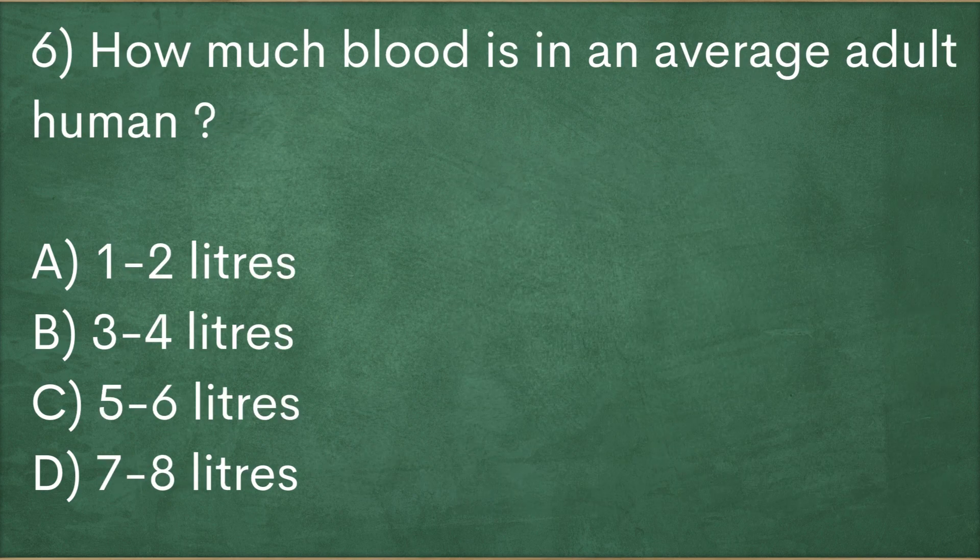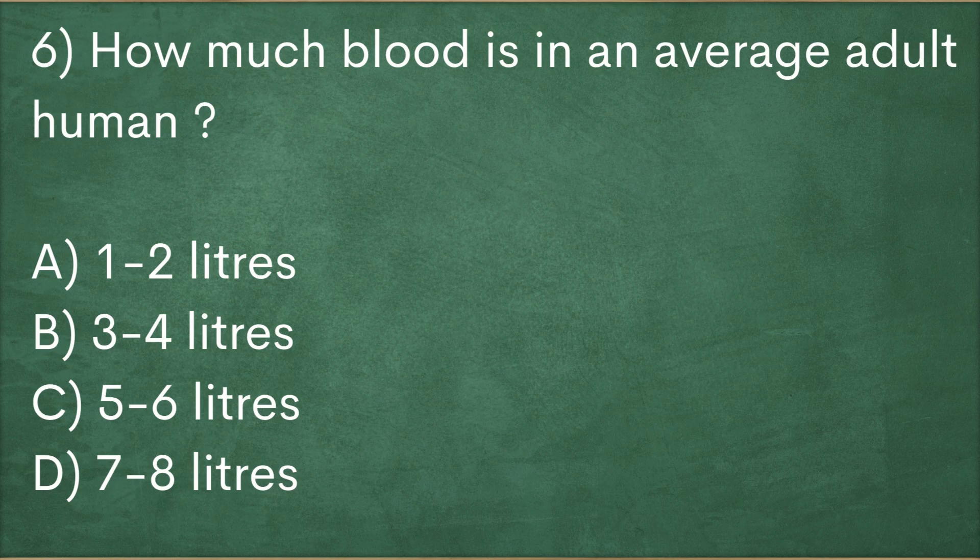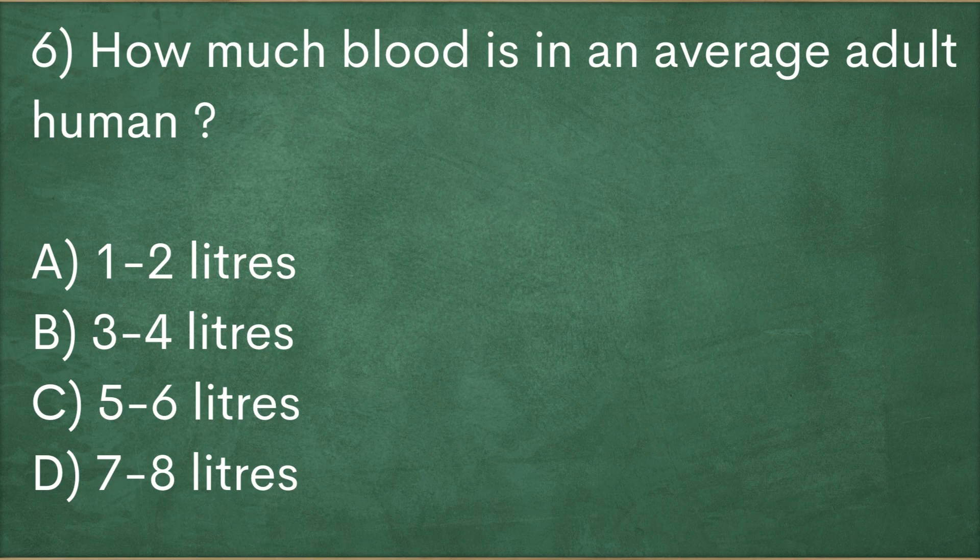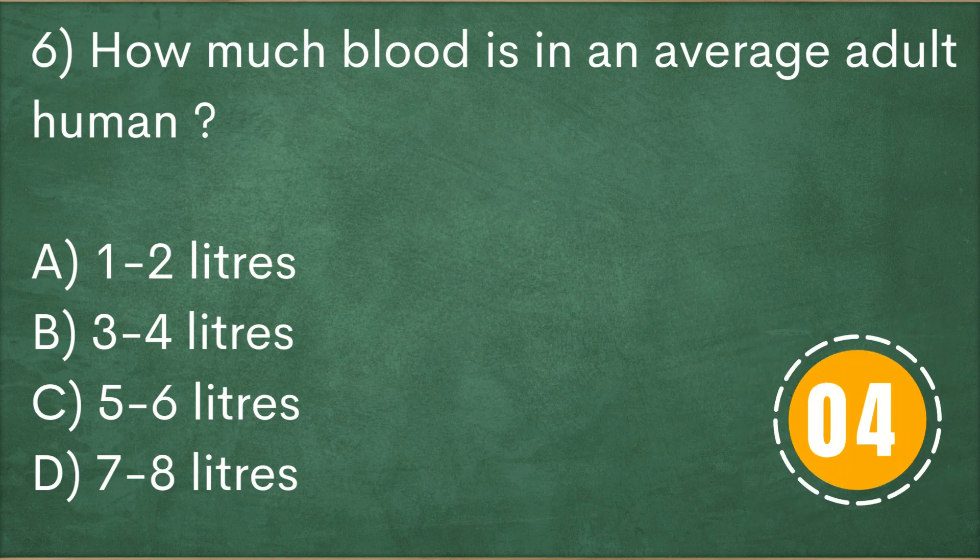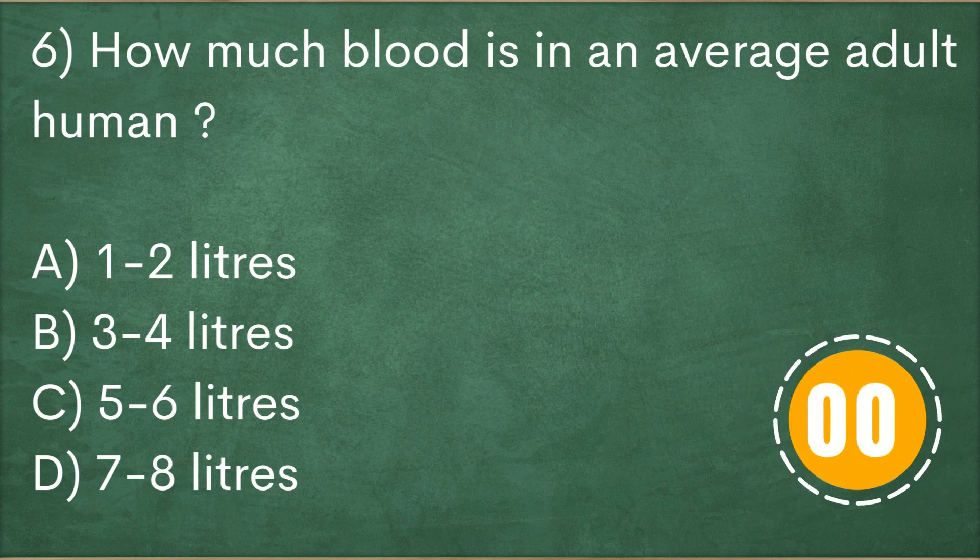How much blood is in an average adult human? 1 to 2 liters, 3 to 4 liters, 5 to 6 liters, 7 to 8 liters. Answer is 5 to 6 liters.